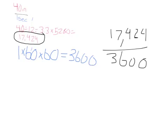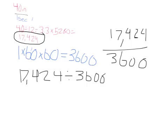Now we're going to divide 17,424 divided by 3,600, which equals 4.84.